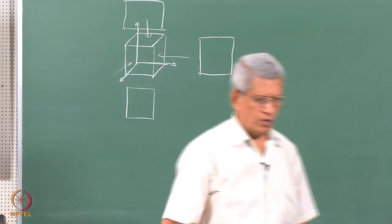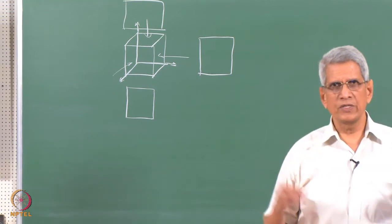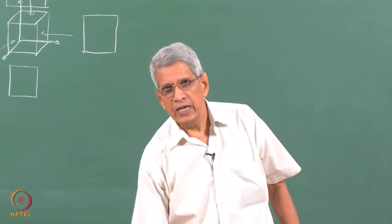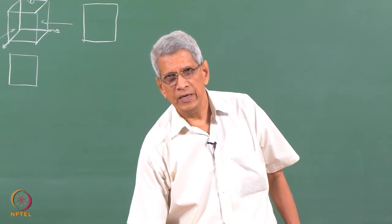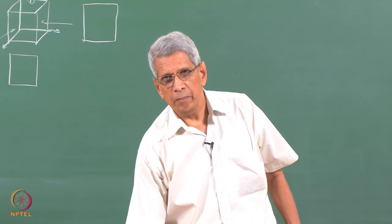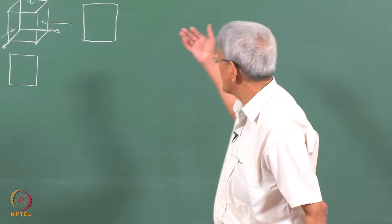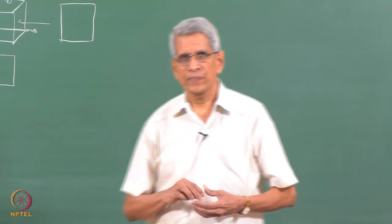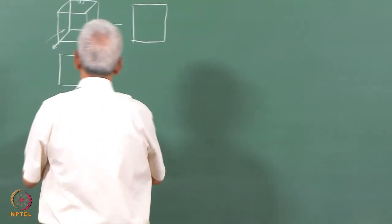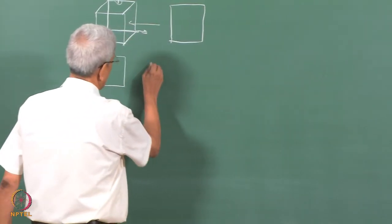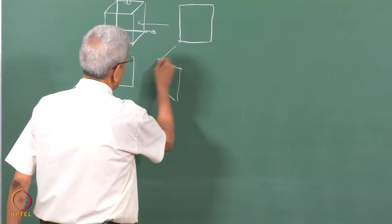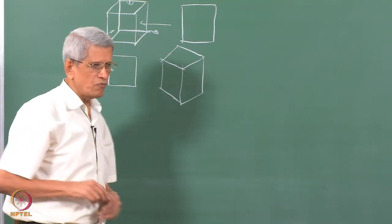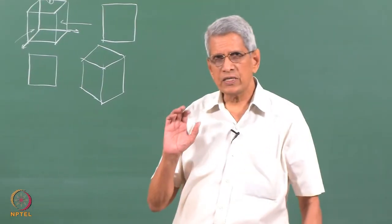If this information is available, we can put the views together to understand how the object looks. This is what is used in engineering drawing to describe complex machines — somebody makes the drawing and another person constructs the machine based on it. This drawing itself is a parallel view, and there are many ways in which the cube could be drawn, including oblique views.